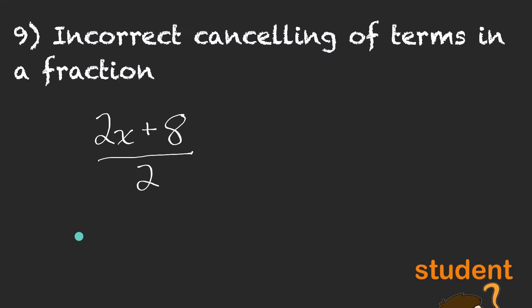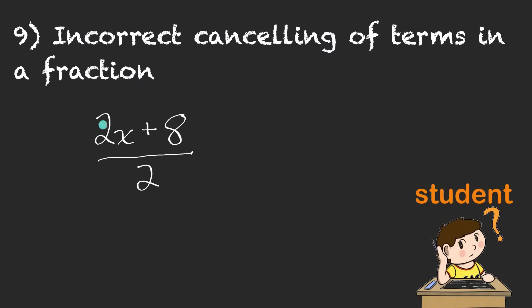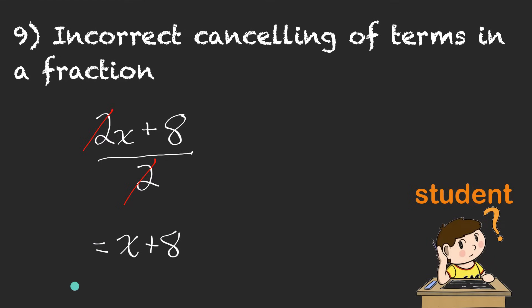I love it when stuff cancels out in questions. This one's easy. I've got a 2 in the numerator, a 2 in the denominator. Anything divided by itself cancels out, right? So all I'm left with is x plus 8. Easy.